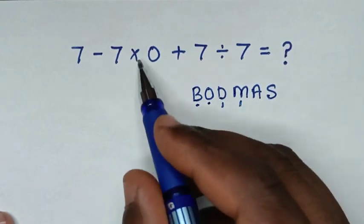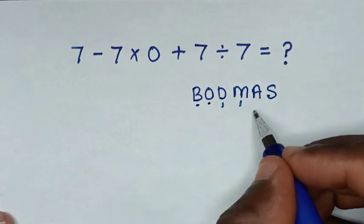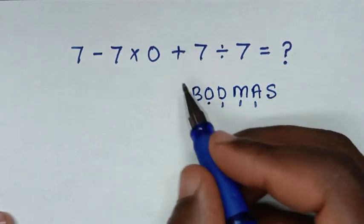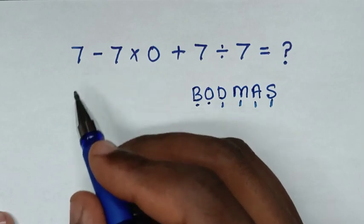M for multiplication, we have multiplication. A for addition, we have addition. And S for subtraction, we have subtraction.